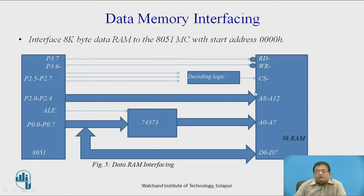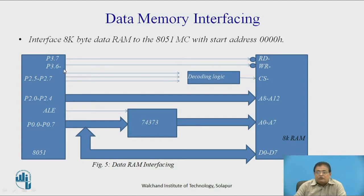The remaining three address bits, A13, A14, and A15 are used to select or enable this particular memory chip for the desired address range. This decoding logic will be changed according to your address range. The read signal from the 8051 goes to the read pin of the memory, and similarly the write signal from the 8051 goes to the write pin of the data memory.